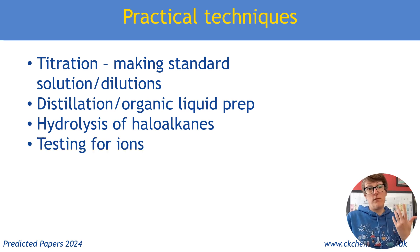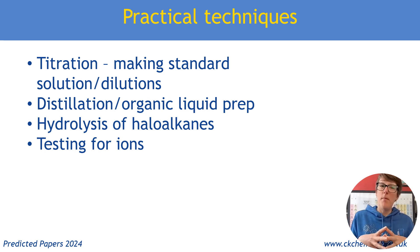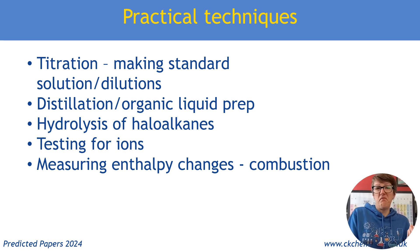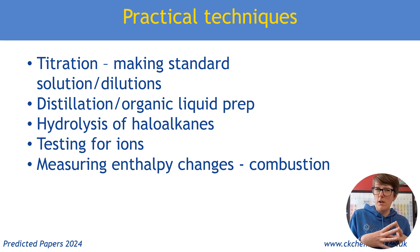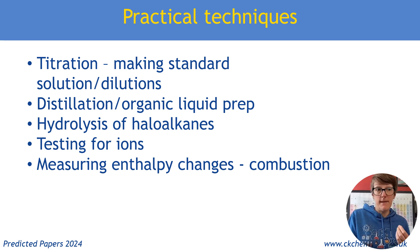Testing for ions links into that because we're testing for the halide ions - the anions specifically. There's been a bit of transition metal flowchart stuff, but maybe an unknown transition metal compound as well. Measuring enthalpy changes - a shout-out for combustion: copper can, spirit burner underneath. Make sure you can describe that kind of experiment - not just process the results of it, but also say how you could carry it out. That's potential six-marker territory. Comparing combustion enthalpies in terms of bond making and bond breaking.